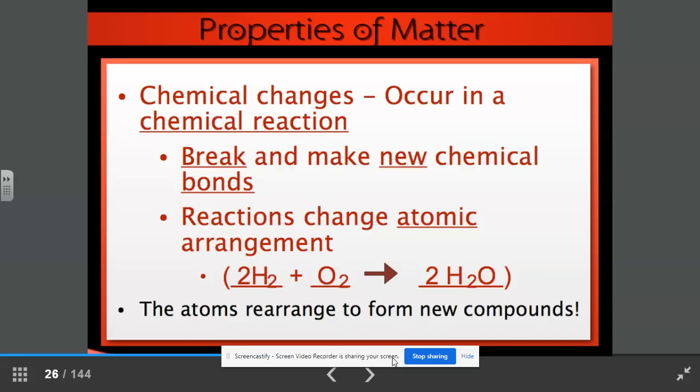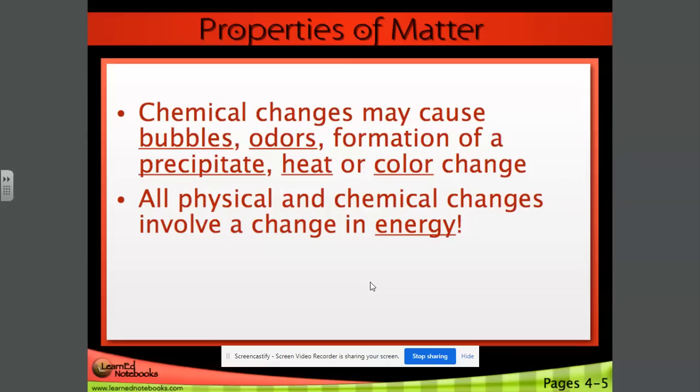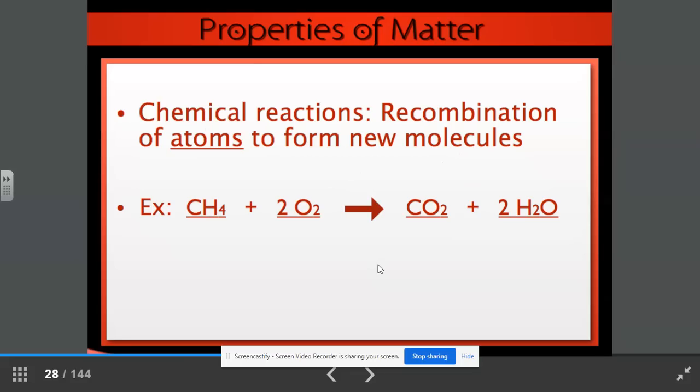Chemical changes may cause bubbles, odors, the formation of a precipitate, heat, or a color change. All of these indicate that you've had a chemical change occur. All physical and chemical changes involve a change in energy. Chemical reactions. This is the recombination of atoms to form new molecules. For example, CH4 plus 2O2. This arrow tells us that a chemical reaction has occurred. And the products are CO2 and 2H2O. So we have methane combined with oxygen. It gives us or yields carbon dioxide and water.